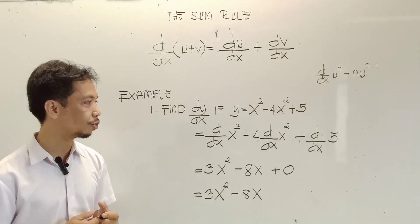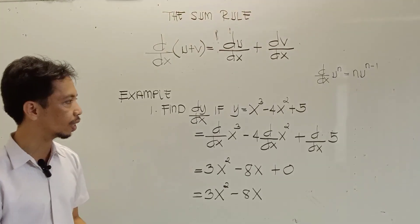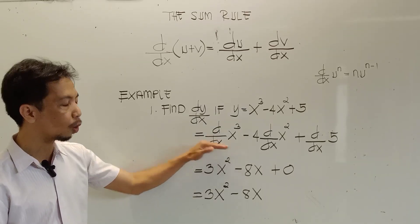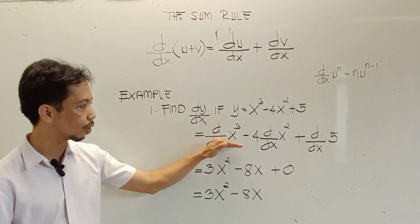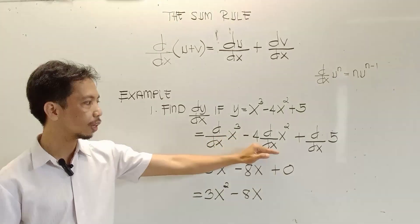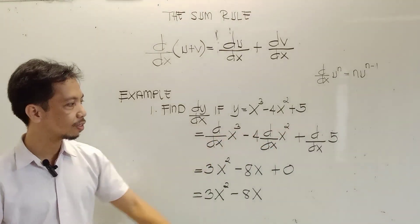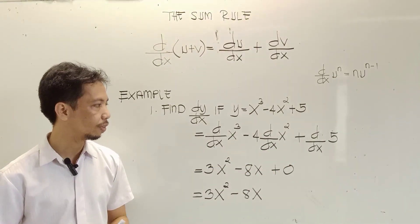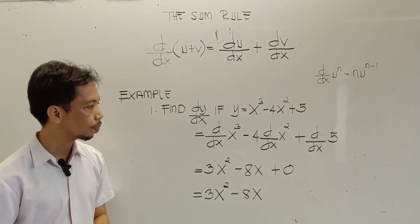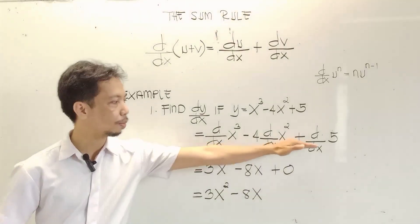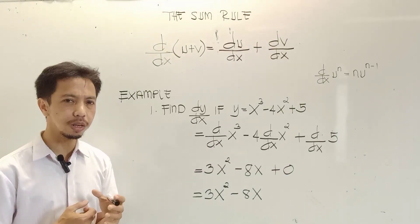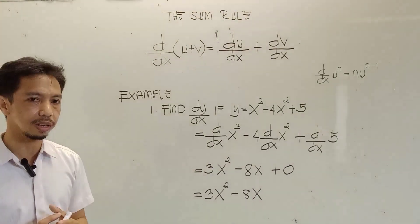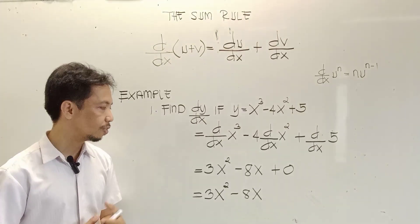As our definition says, we are going to find the derivative of each term. So we have d/dx of x cubed, minus 4 times the derivative of x squared, plus the derivative of 5, or d/dx of 5. Don't forget to put d/dx to denote that you are finding the derivative of that certain term. So let's simplify.